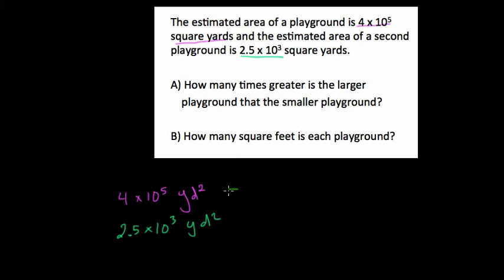Well, we can write these out in standard form to compare them. We could write that 4 times 10 to the 5th is a 4 with 5 zeros: 1, 2, 3, 4, 5. That's 400,000 square yards.